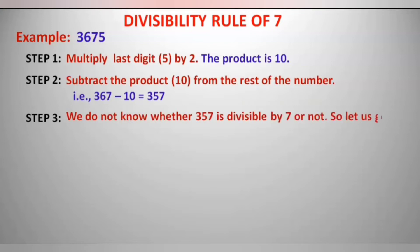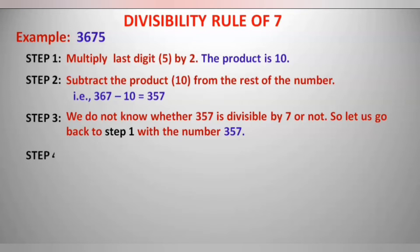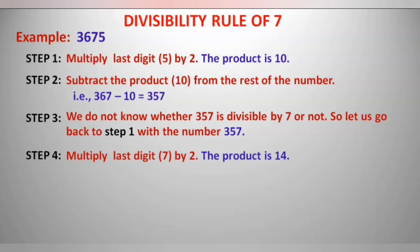So let us go to the first step again with 357. Now multiply the last digit of 357, that is 7, with 2. The product becomes 7 into 2, that is 14. Coming to the next step, subtract this 14 from the rest of the number.